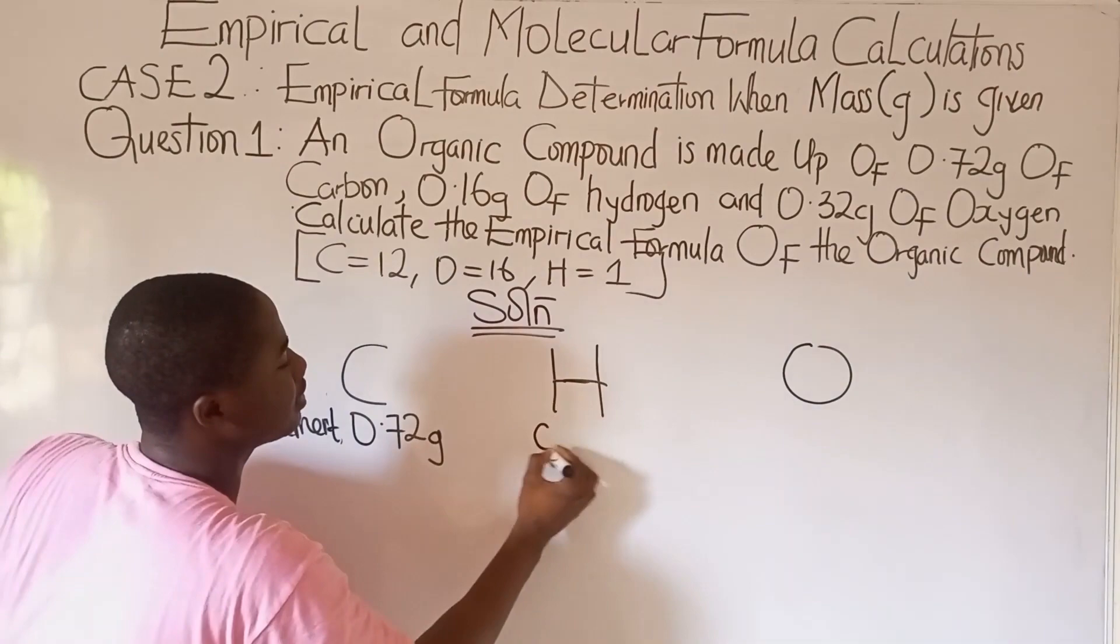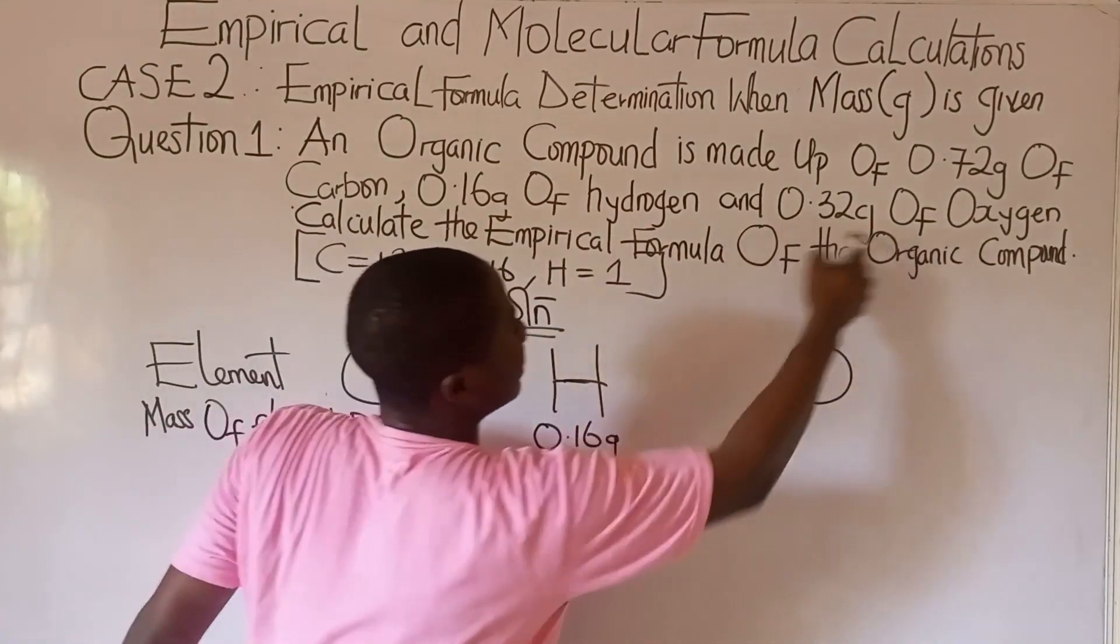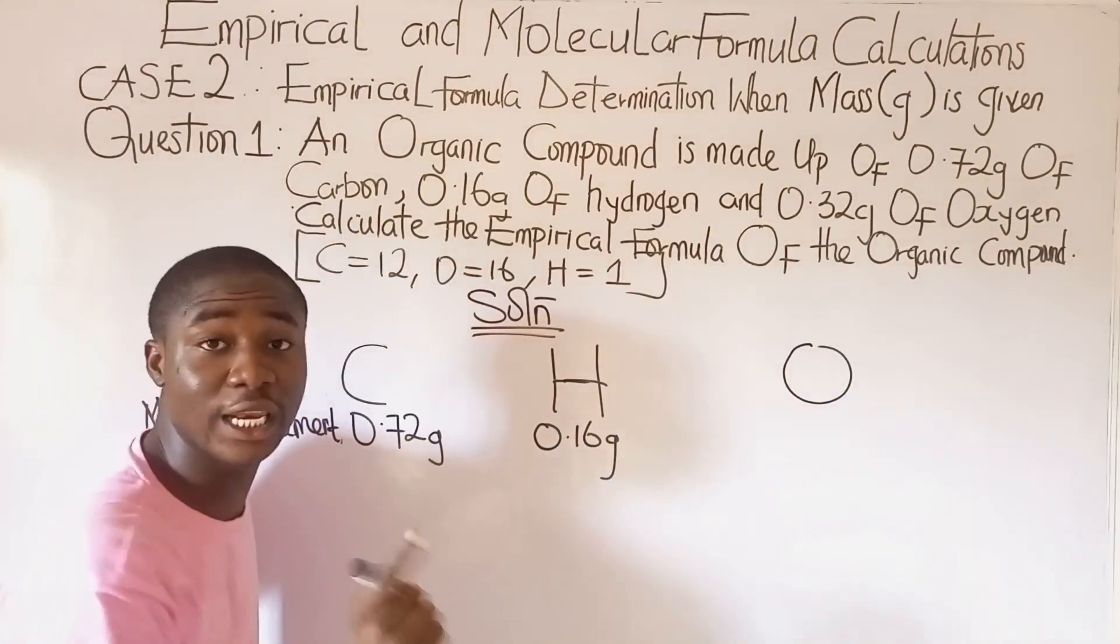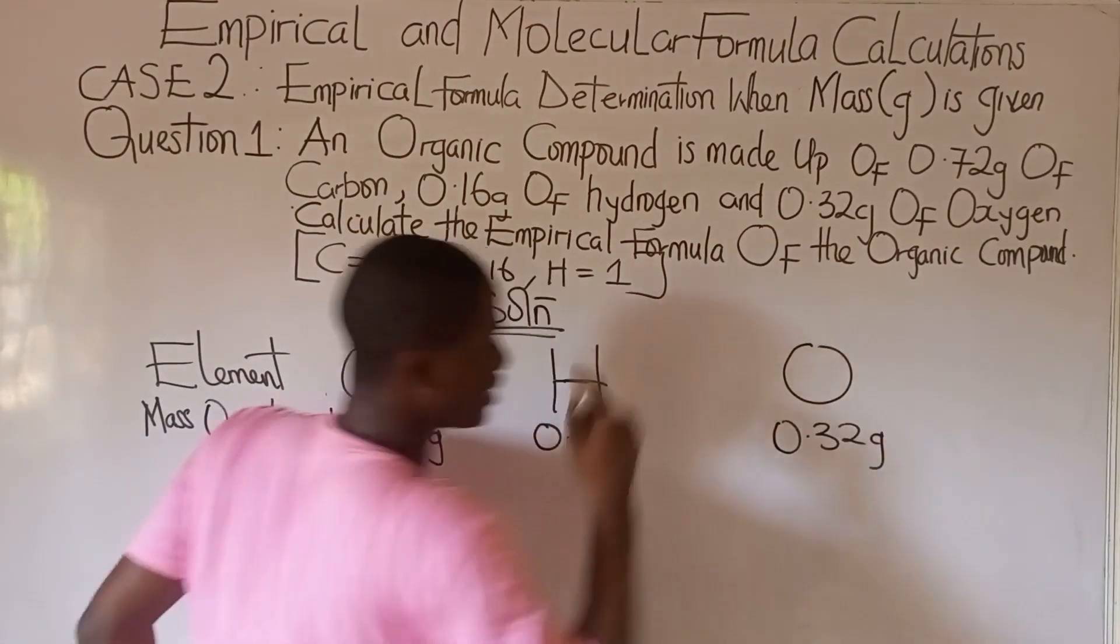Hydrogen is 0.16 grams of hydrogen. And lastly, 0.32 grams of oxygen. So here becomes 0.32 grams of oxygen.